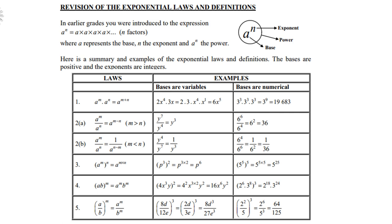Law number 3: a to the power m, further raised to the power n, equals a to the power m times n. For instance, p to the power 3 to the power 2 gives p to the power 6. Or 5 to the power 5 to the power 5 gives 5 to the power 25.